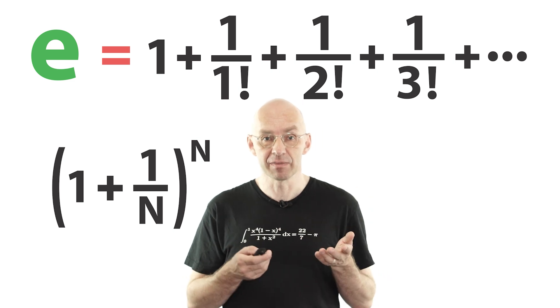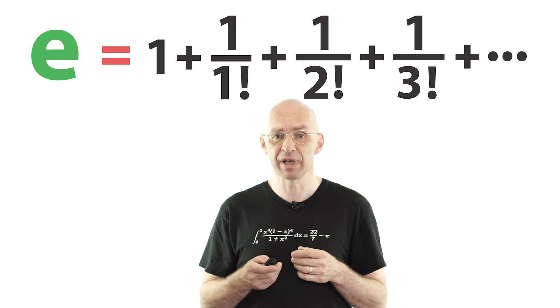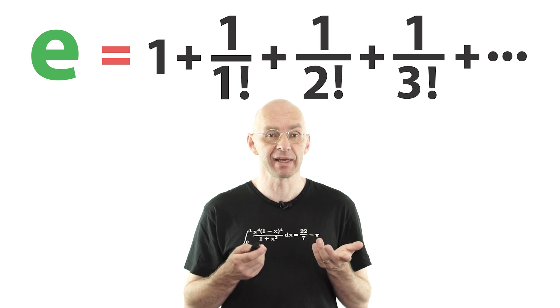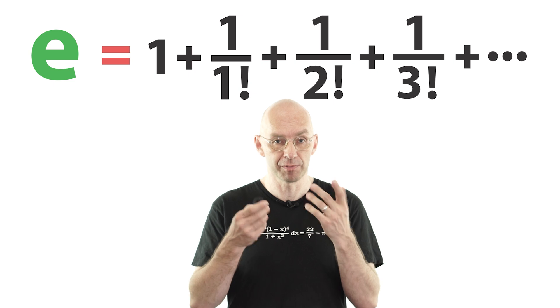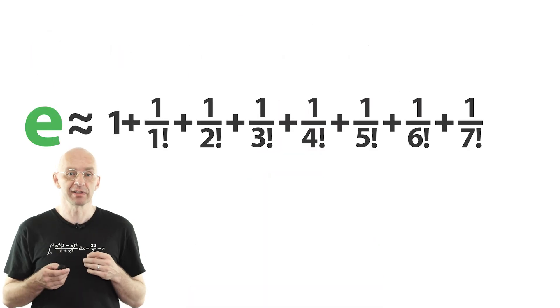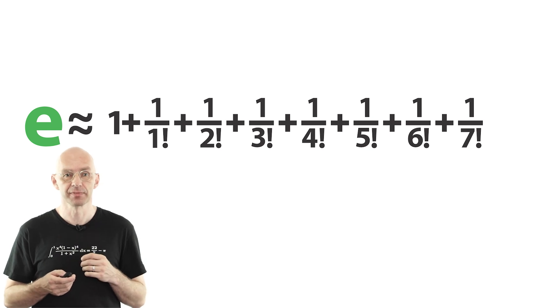Now on the other hand, the infinite sum is much more user friendly in this respect. As we add more and more of those simple terms our approximation gets better and better. And it's also very easy to estimate how well an approximation, a chopped off partial sum, is. So here we've chopped off the infinite sum at the 8th term. How close does this get us to e?